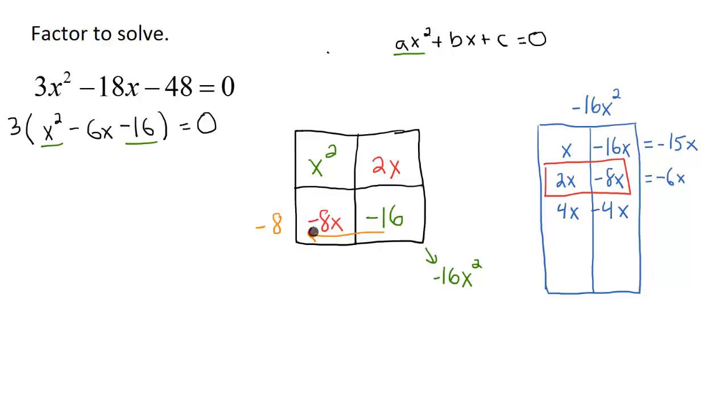And I do negative because this number right here, this term is negative, so you always want to take the sign of the term that's kind of out here towards the side. Now I want to take the GCF between these two terms, which is just going to be an x.